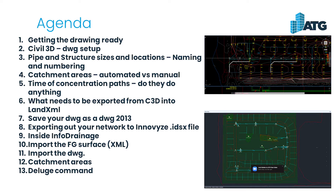The agenda for today: getting the drawing ready, setup of the drawing, pipe and structure sizes, locations, naming and numbering. Also catchment areas — automated versus manual — time of concentration, what needs to be exported from Civil 3D, and what I mean by getting the background drawing inside of InfoDrainage and what different file formats we'll need.